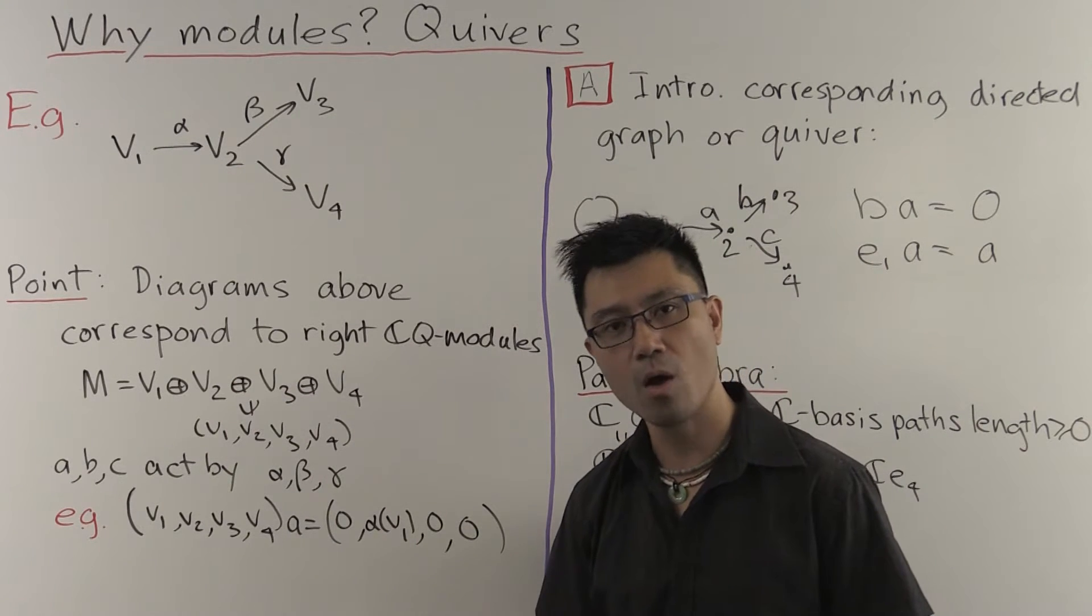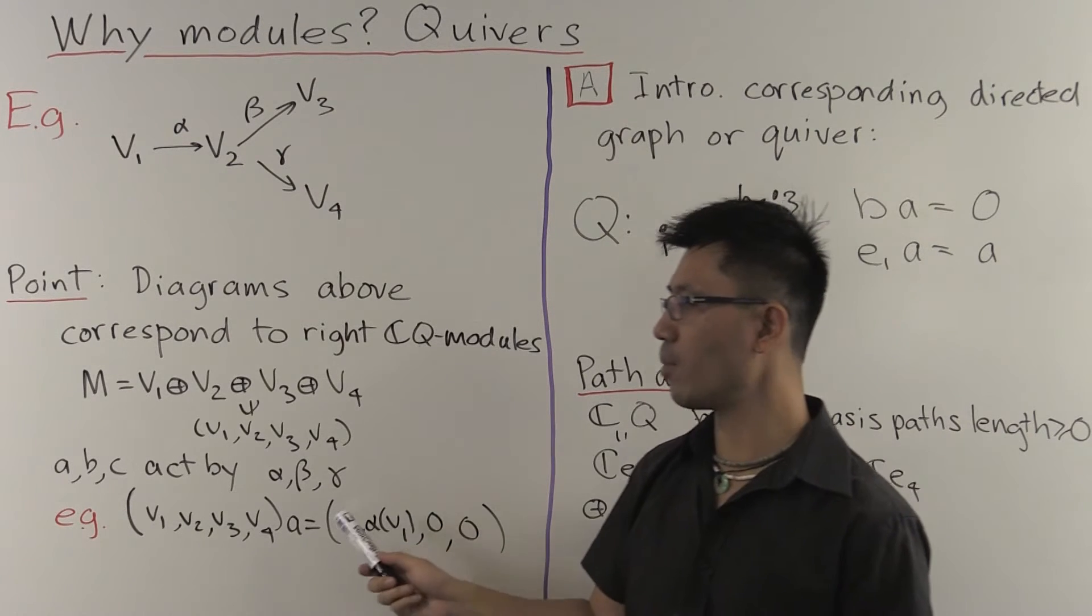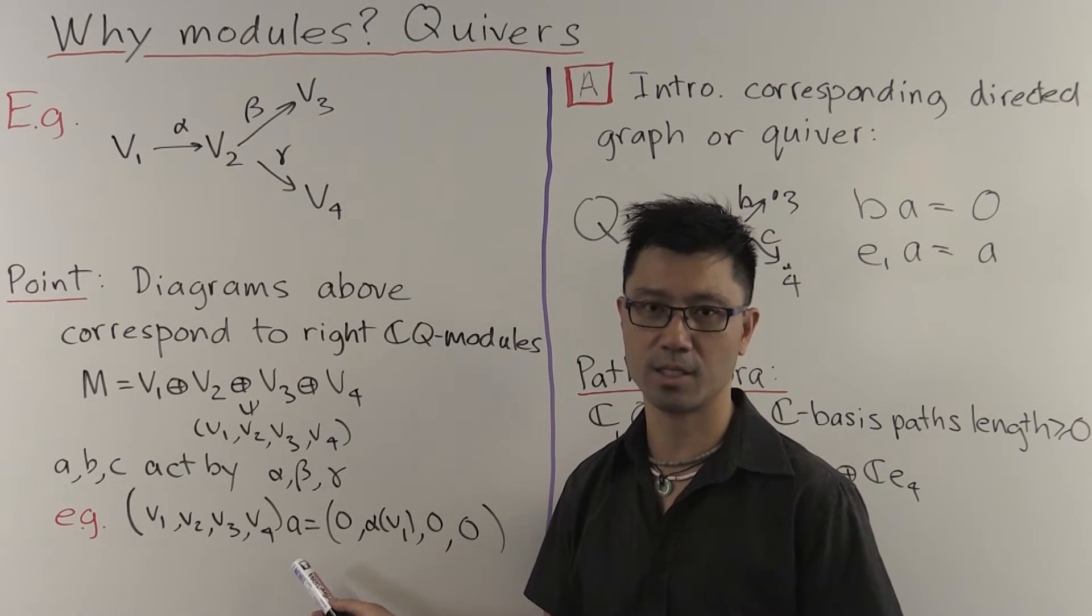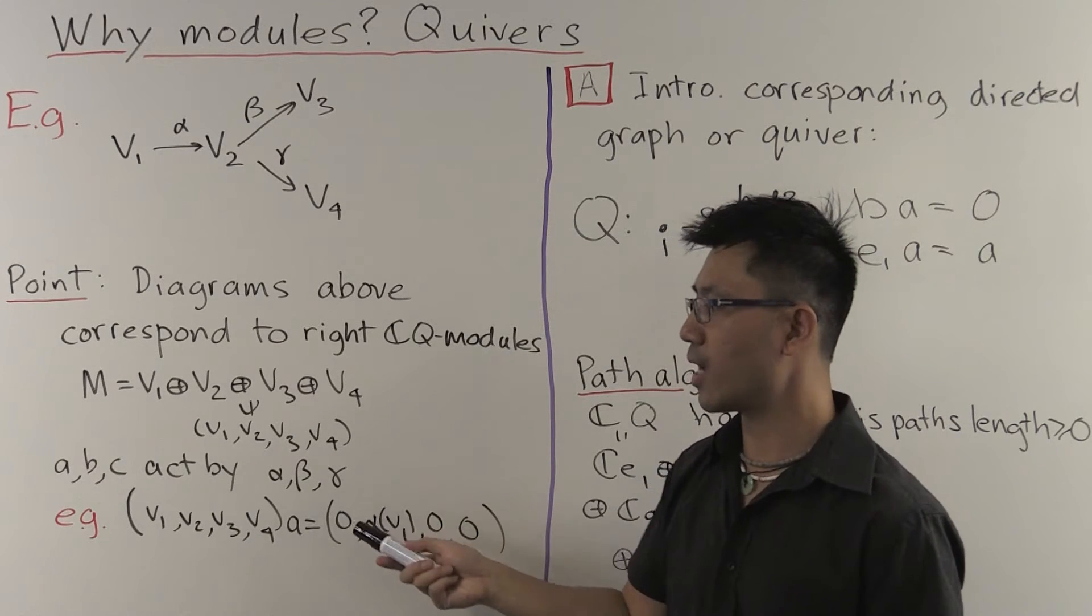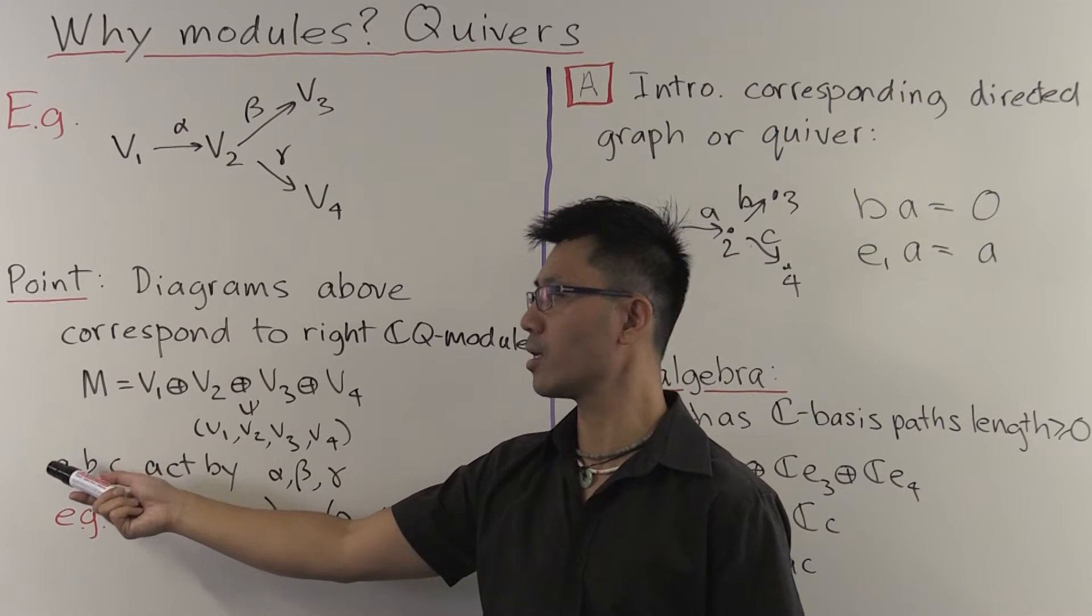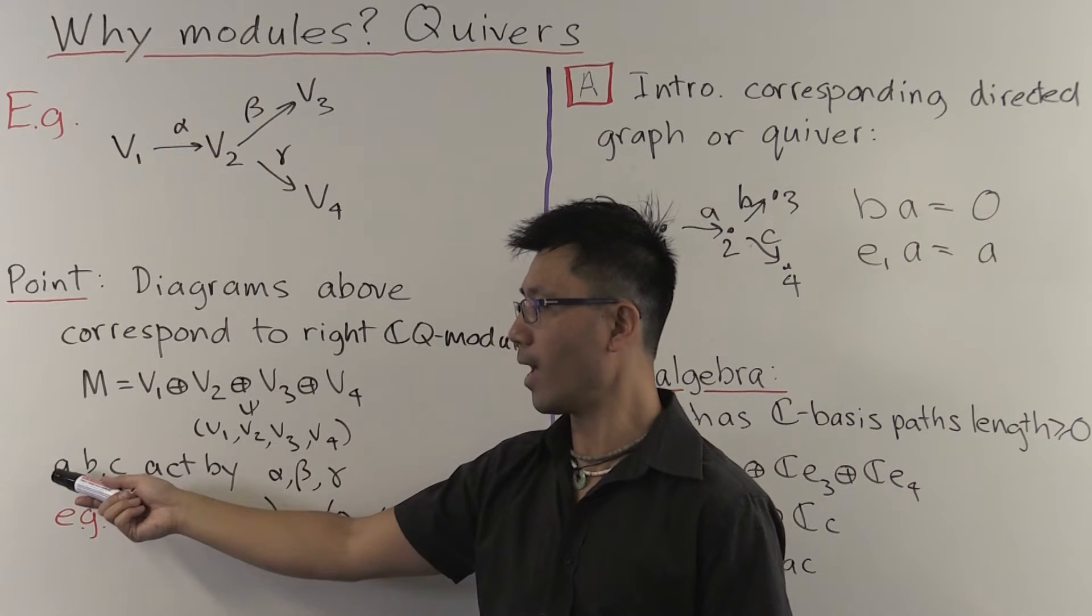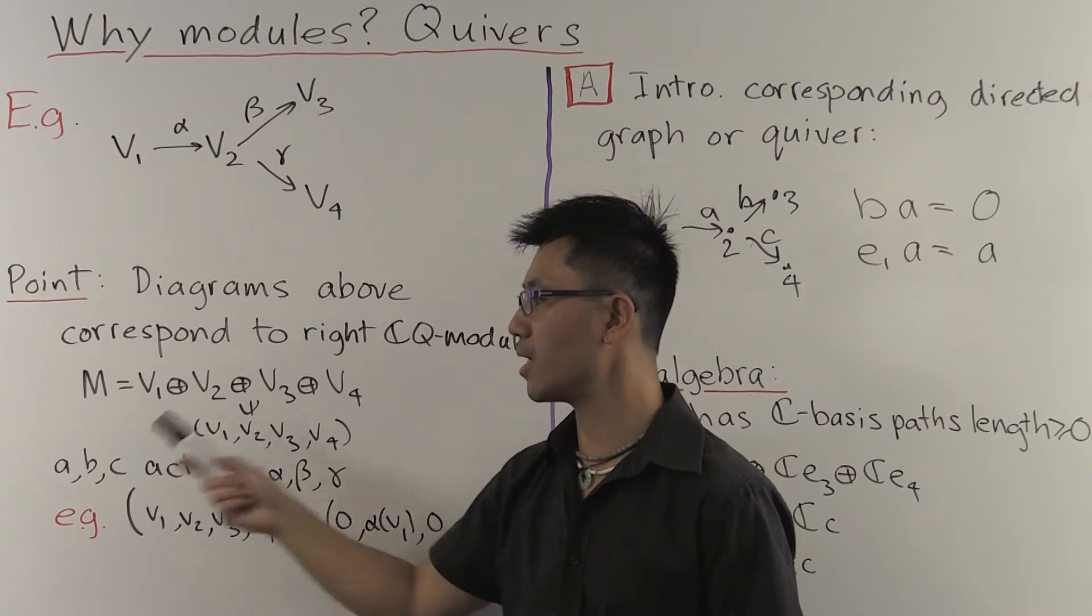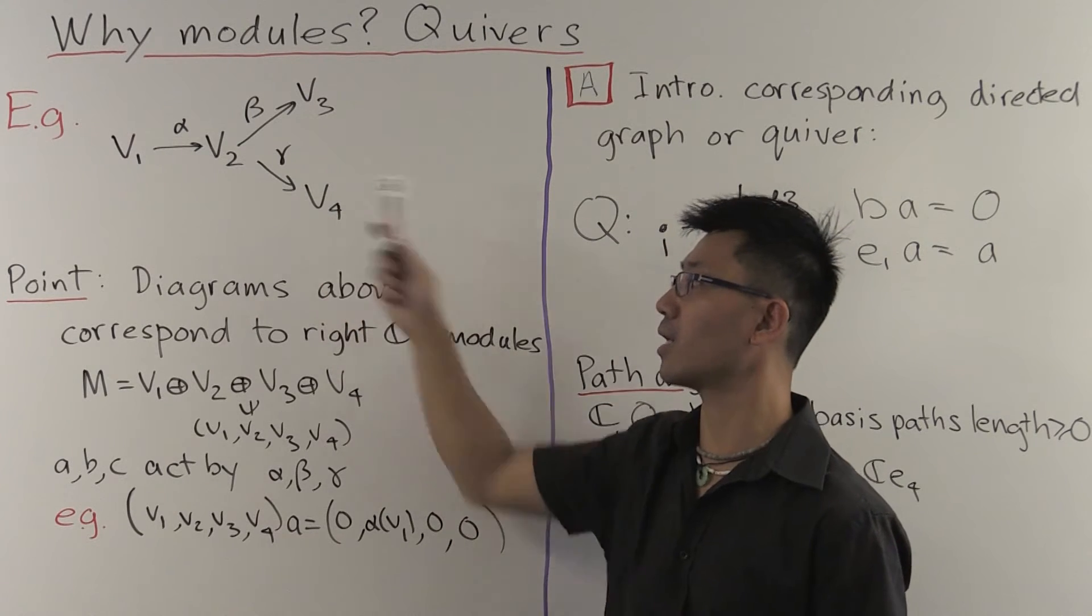That gives you a vector space structure. And the only thing that you need to do now is to say what the scalar multiplication is. And the scalar multiplication is on the right, the way I've set it up. The only thing you need to do is to say essentially how do the paths of length 1 act, A, B and C.